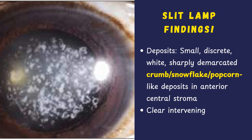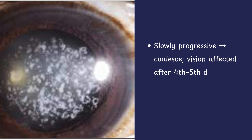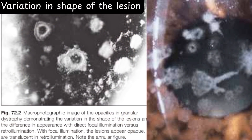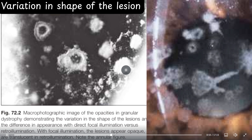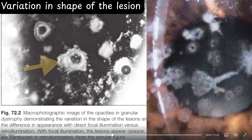The intervening stroma remains clear initially. With time, deposits increase in number and coalesce, eventually impairing vision by the fourth or fifth decade. An important point is that the peripheral cornea, 2 to 3 millimeters from the limbus, is typically spared. The opacities in GCD1 can vary in shape, appearing opaque in direct focal illumination but more translucent in retro-illumination. Notice also the annular figures seen in some cases.